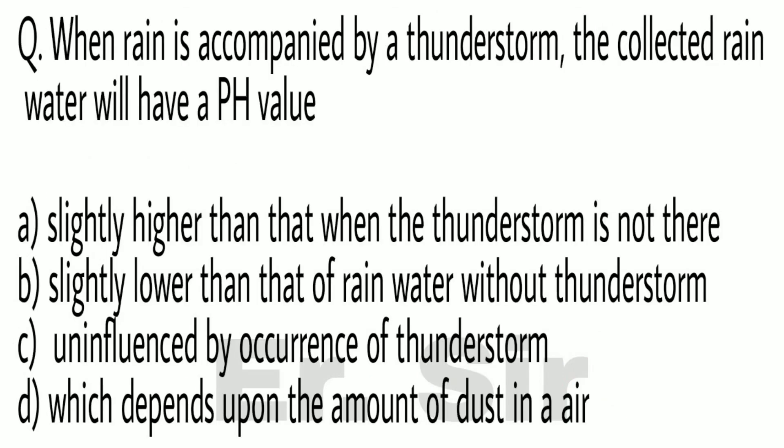When rain is accompanied by a thunderstorm, the collected rainwater will have a pH value — slightly higher than that when the thunderstorm is not there, or slightly lower than that of rainwater without thunderstorm.